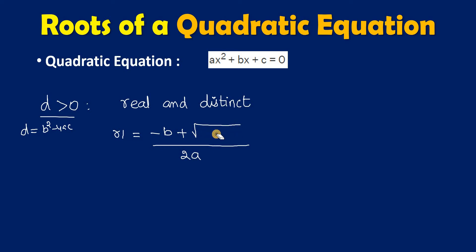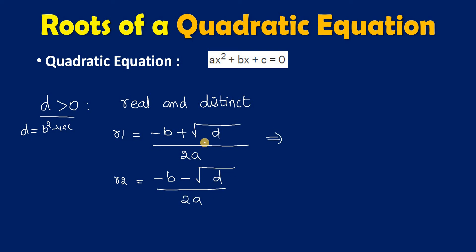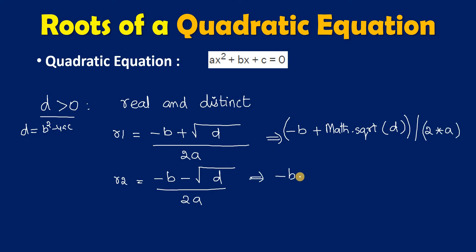So r1 = (-b + √d) / 2a, and r2 = (-b - √d) / 2a. In Java, r1 is written as (-b + Math.sqrt(d)) / (2 * a) and r2 is written as (-b - Math.sqrt(d)) / (2 * a).